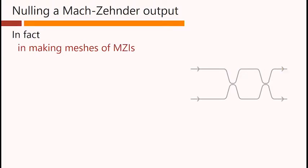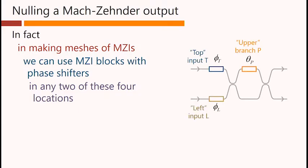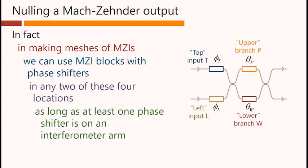In fact, in making meshes of Mach-Zehnders, we can use Mach-Zehnder blocks with phase shifters in any two of these four locations, as long as at least one phase shifter is on an interferometer arm. It is incidentally possible to do this using both phase shifters being on interferometer arms. The algorithm is slightly different then, but this still works.